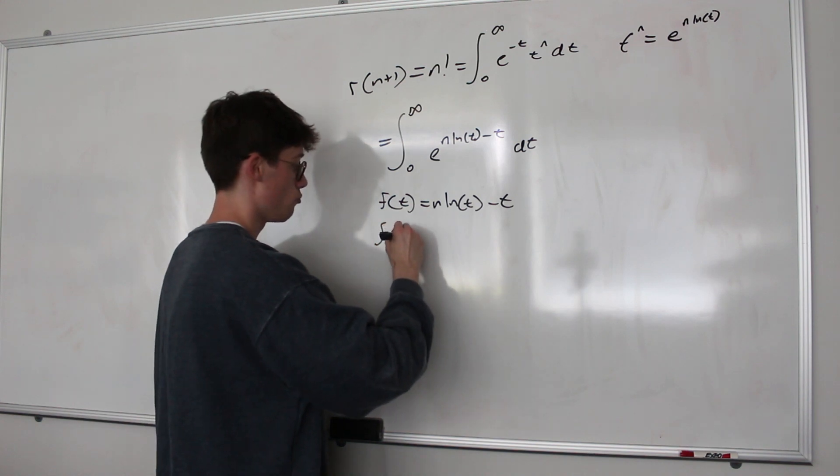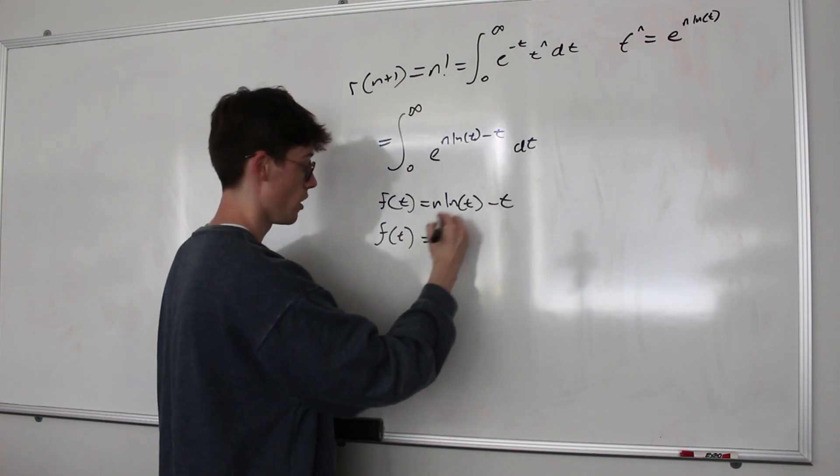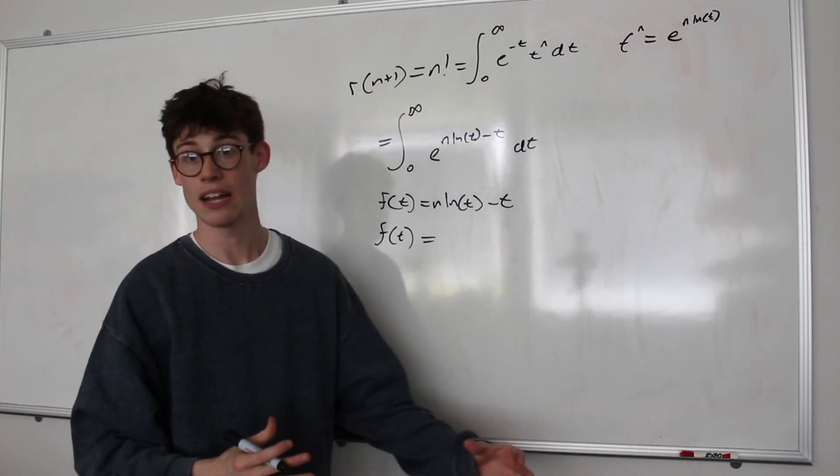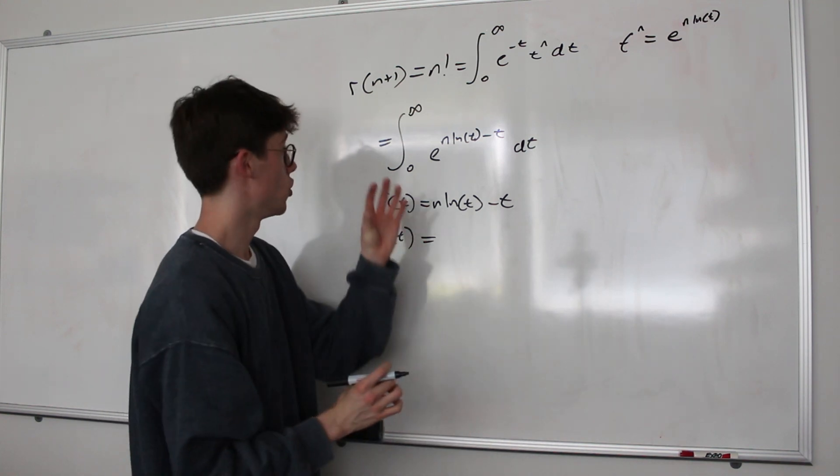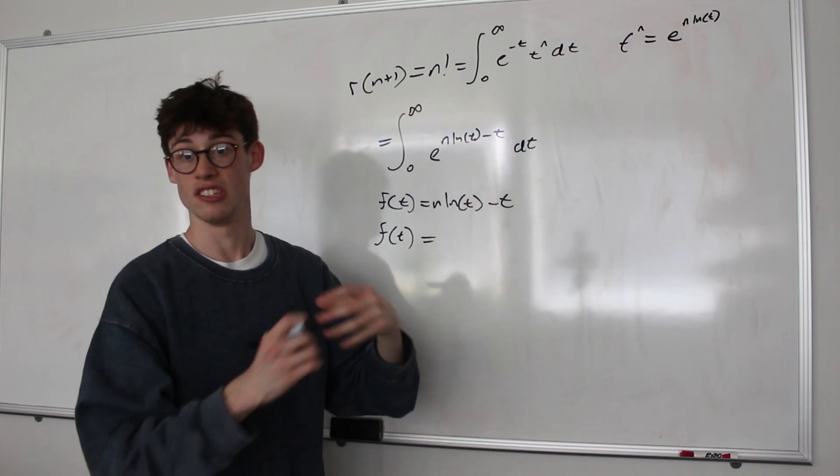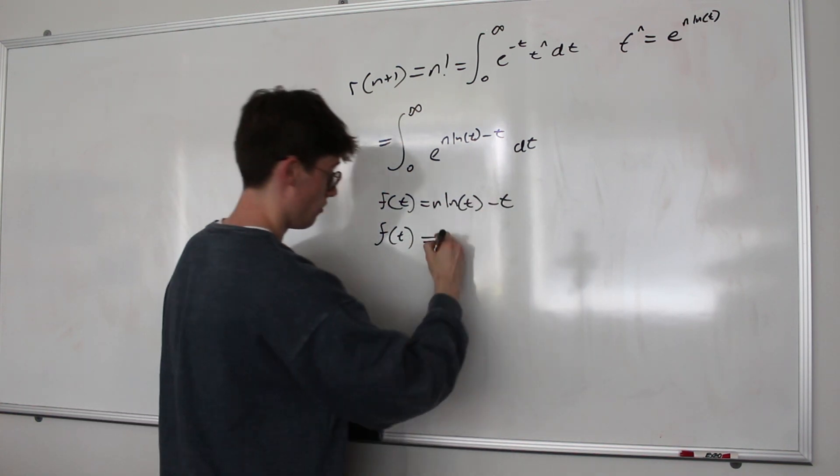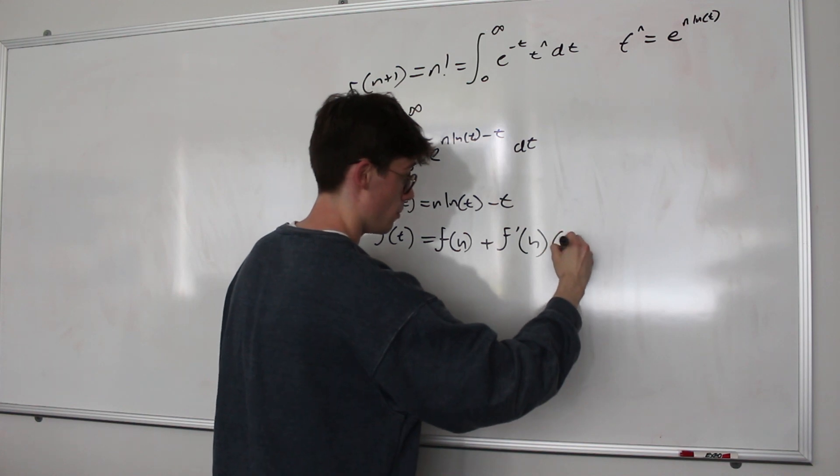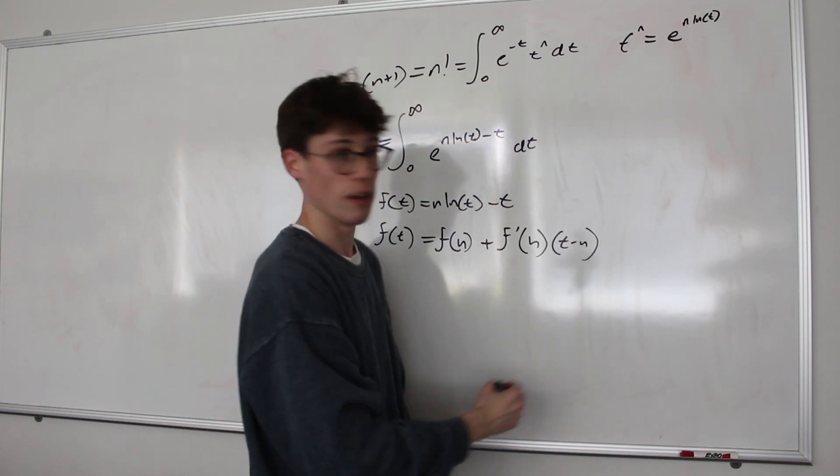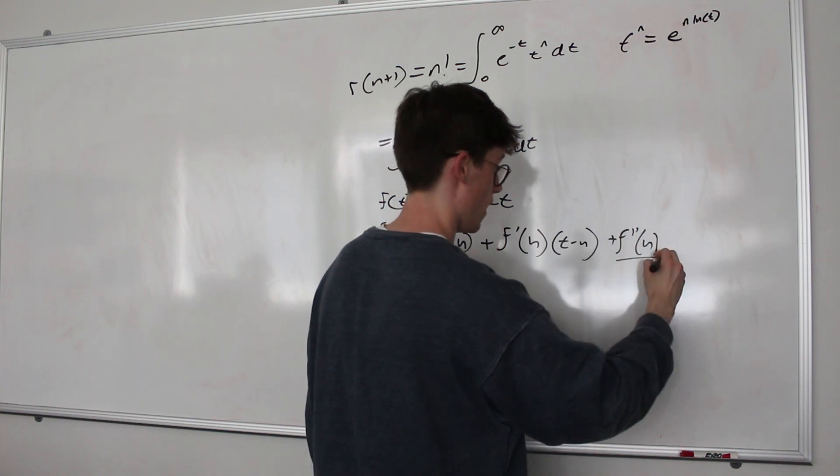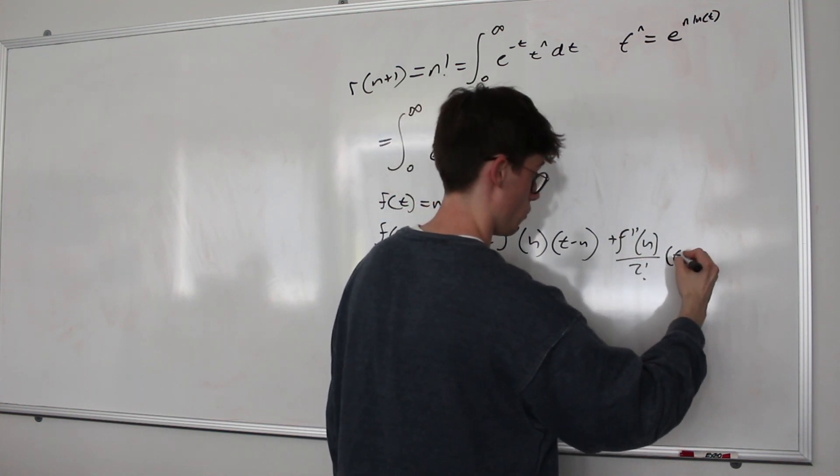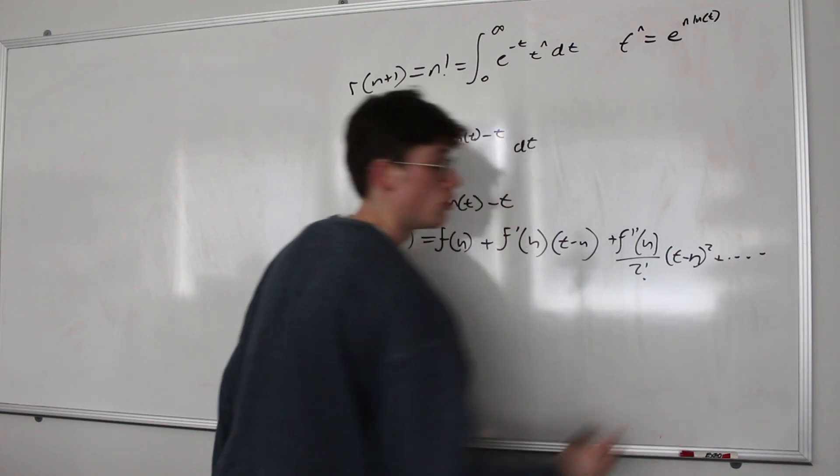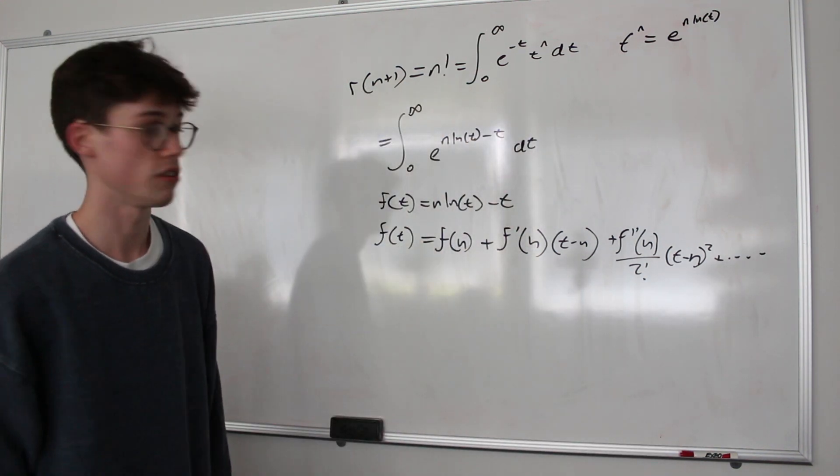Now, in general, the Taylor approximation for a function of t will be equal to... Well, the first thing we have to consider is where are we expanding around. Now with the Maclaurin series this expansion is around zero. But given that I'm approximating n factorial, I want my expansion to be around n. Which means that I'm going to first evaluate the function at n. I'm then going to add that to the derivative evaluated at n multiplied by t minus n. And I'm then going to add that to the second derivative evaluated at n divided by 2 factorial, which is of course just 2, multiplied by t minus n squared. And I'll continue going on up to infinity, but as I said, we're only considering the first three here.